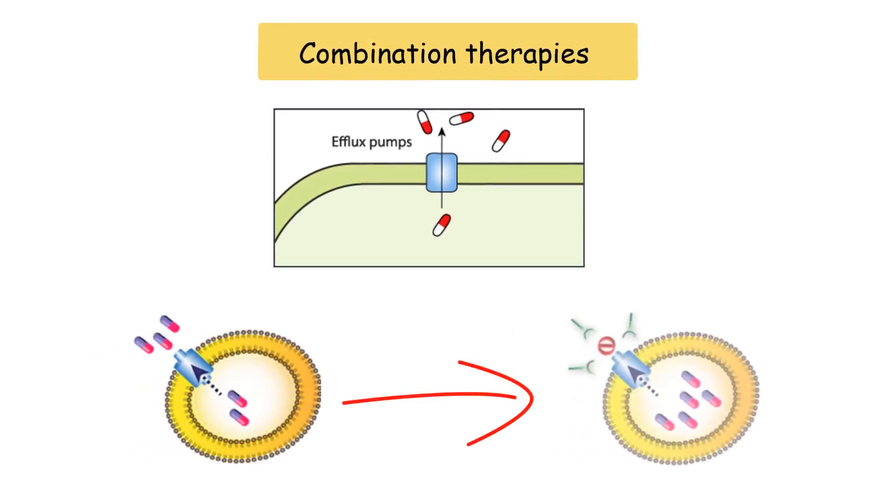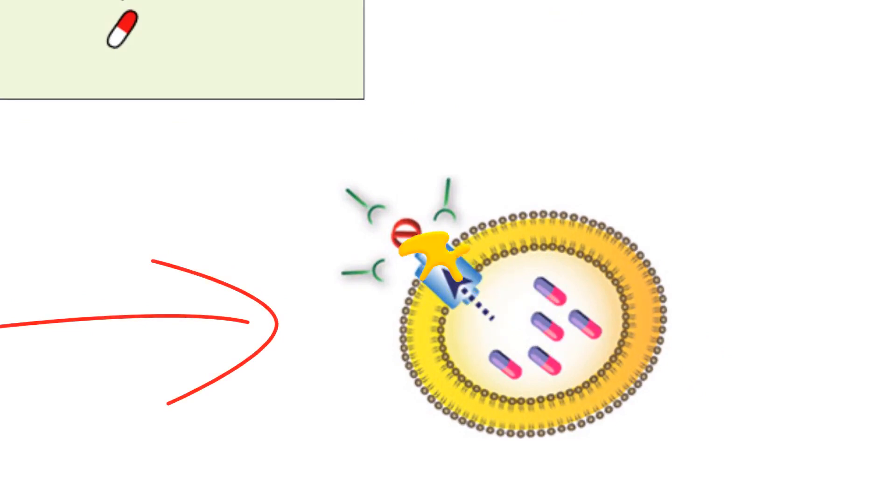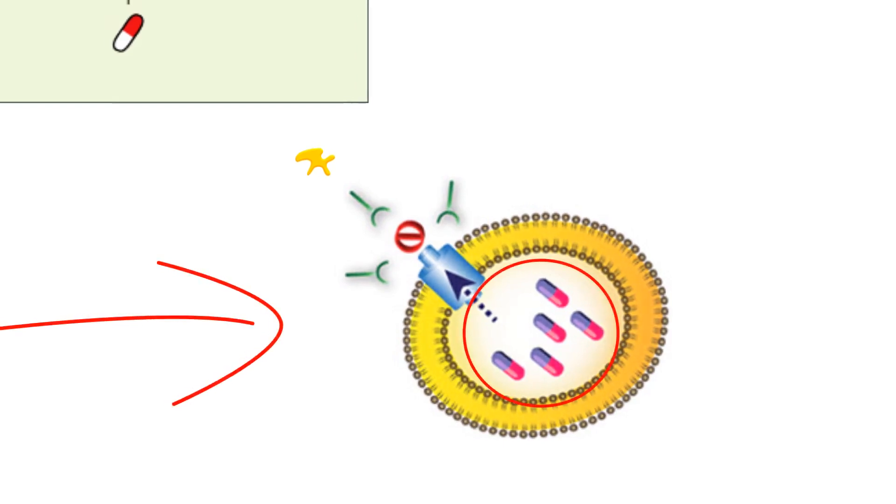A ligand can be provided for the efflux pump to push out of the cell instead of the antibiotic. This has led to a high enough concentration of the antibiotic in the bacterial cell that the antibiotic is once again effective at killing the bacteria.